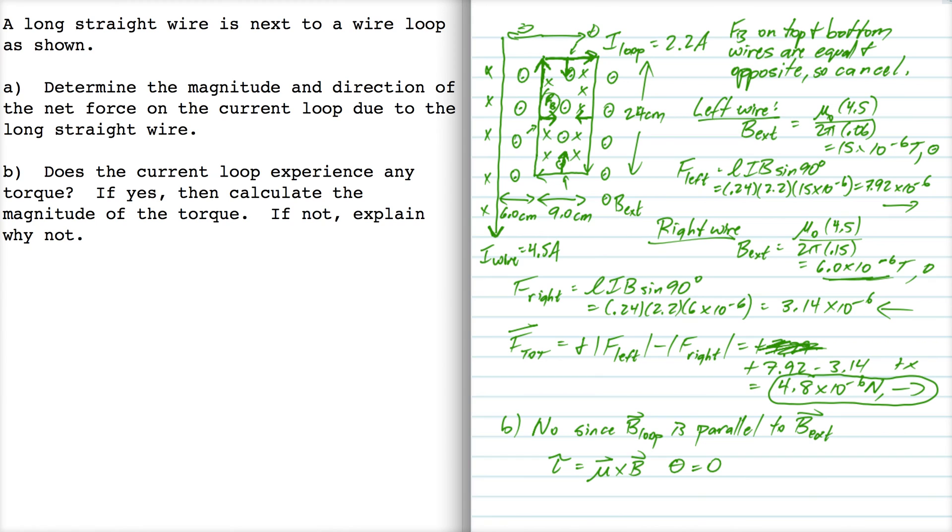Remember mu is in the direction of the magnetic field of the loop, and this B is the external field. And since they're parallel, theta equals zero. Sine theta is zero, and so the torque equals mu B sine theta, which is zero.